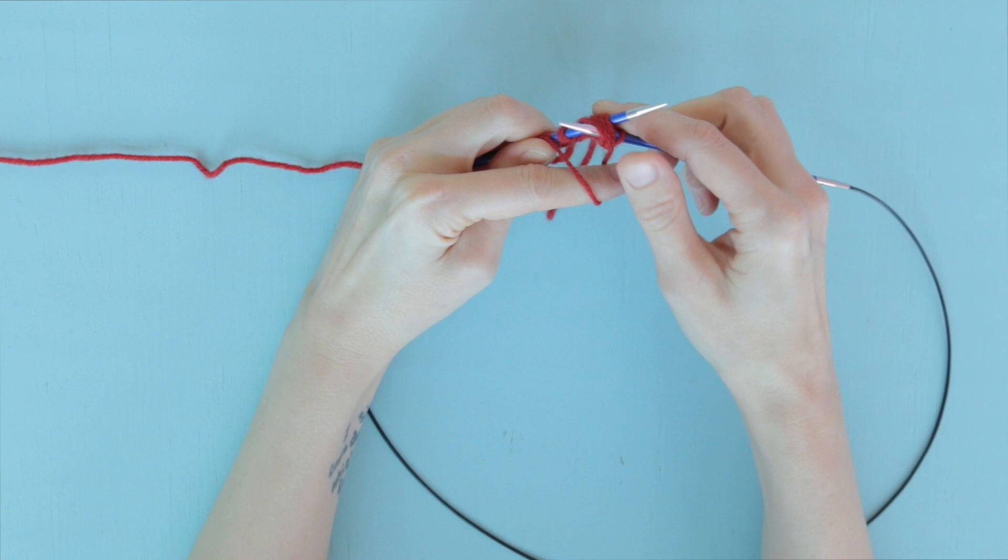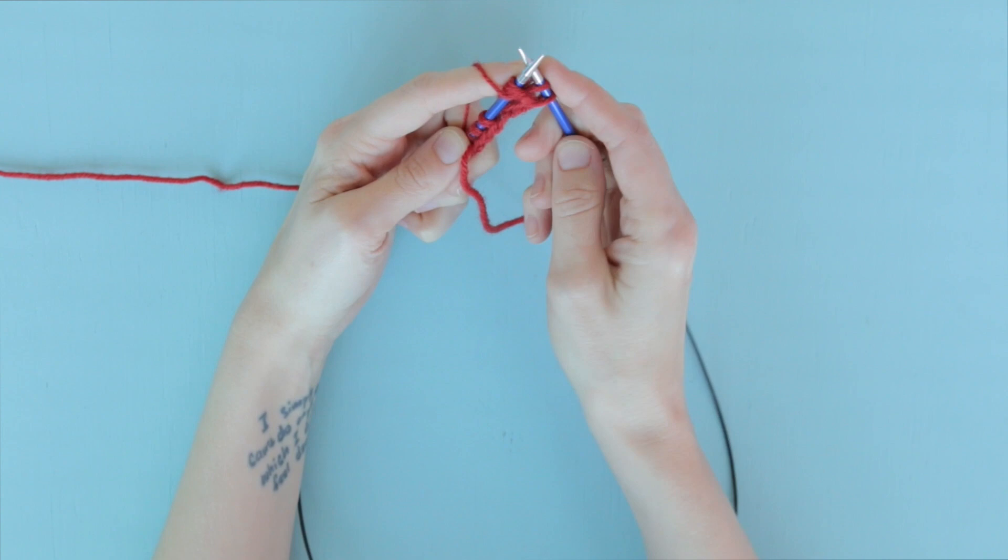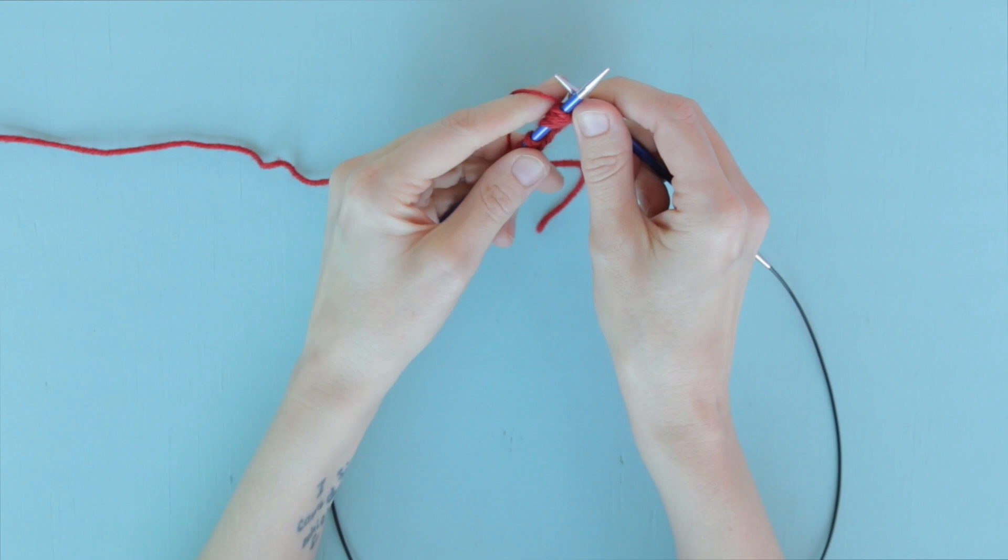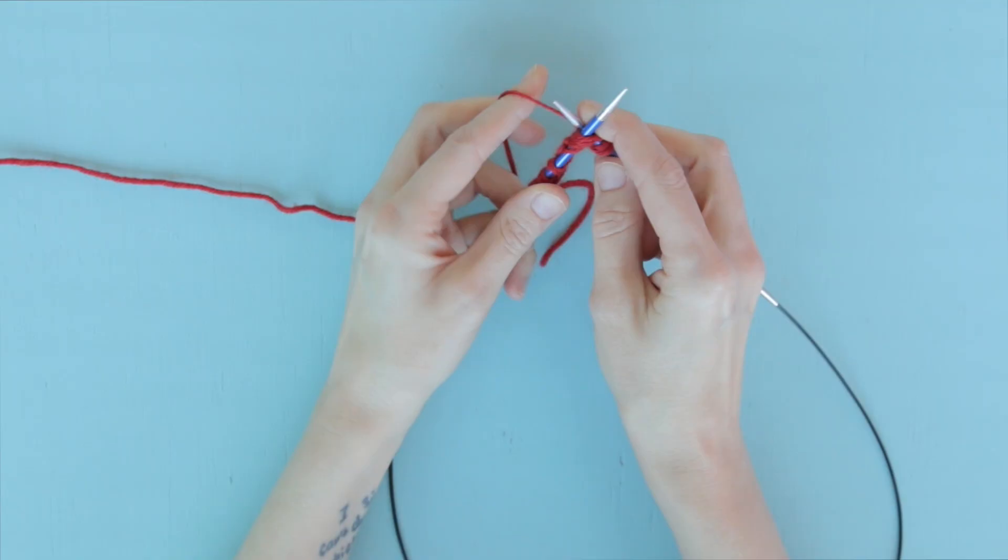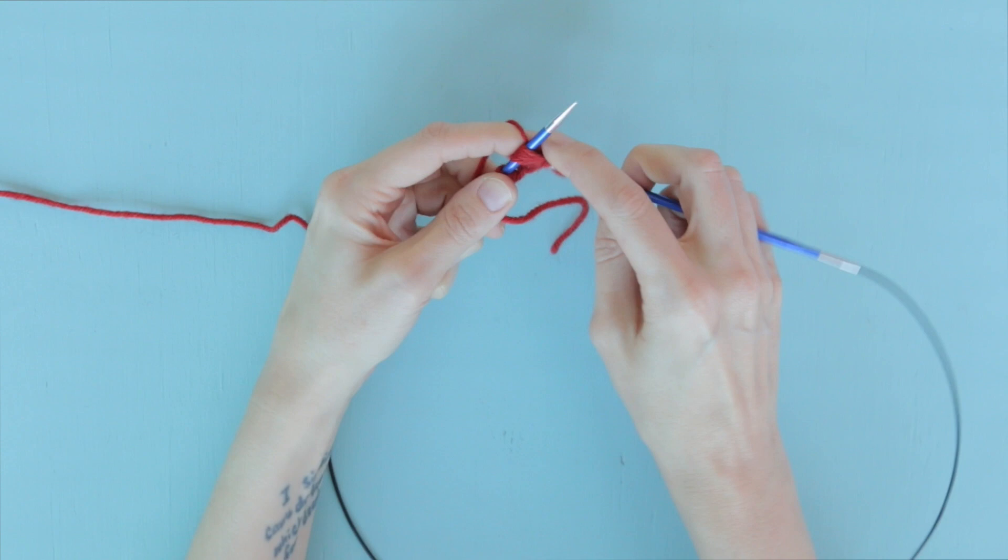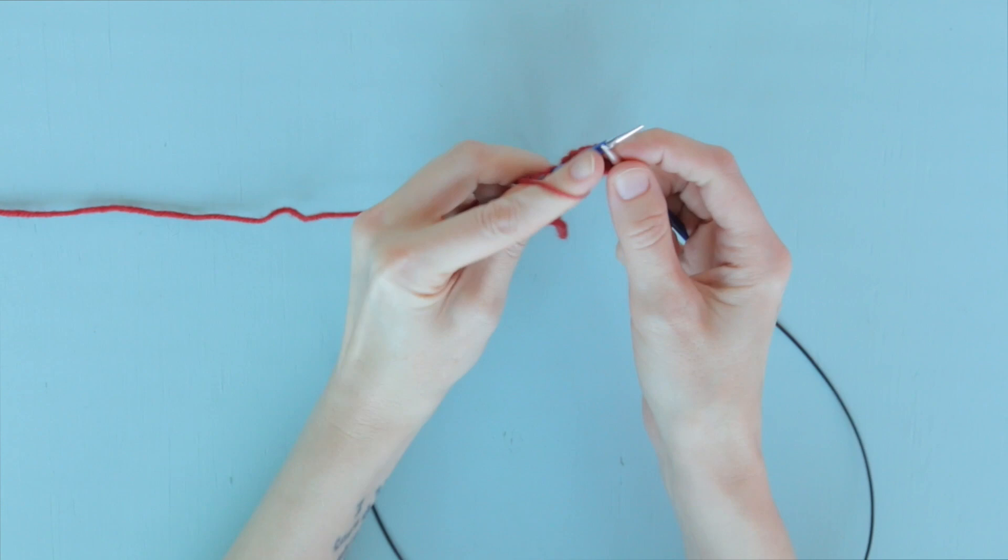Then we need to do that same thing again. So we bring the working yarn to the back between our needles. Then inserting the right hand needle through all four loops again, we knit four together. Then bring the working yarn to the front and draw it down before inserting that needle through all four loops a final time and drawing under a purl stitch.